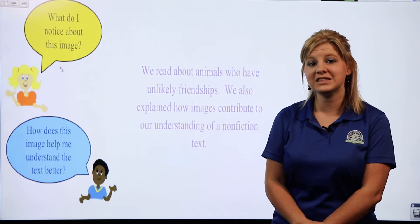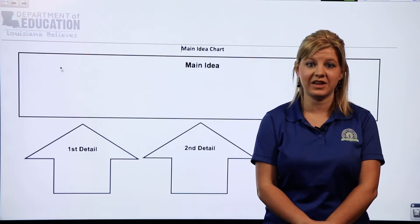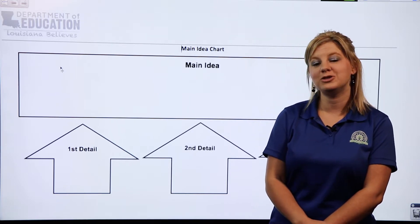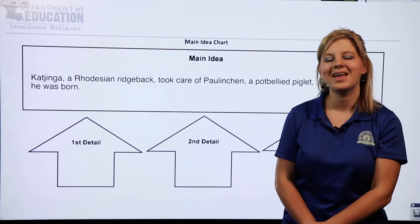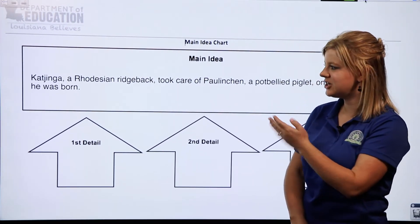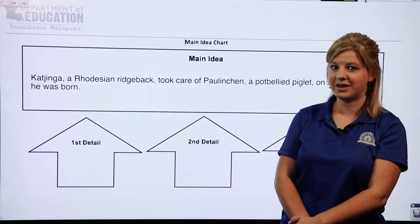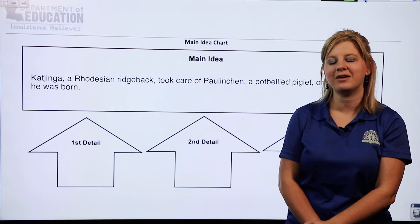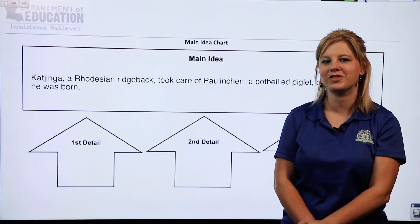In this video I am going to show you how we can take the events from the story with the dog and the piglet and fill them into a main idea chart. The main idea of this text is that Kajinga, a Rhodesian Ridgeback, took care of Palenchen, a pot-bellied piglet, on the night he was born. Now we're going to think about some of the details that the author included to support this main idea.